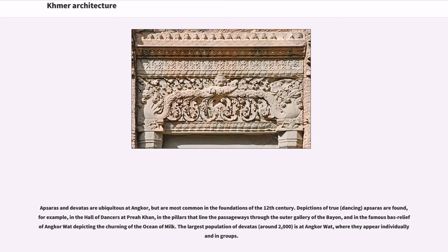Depictions of true, dancing Apsaras are found, for example, in the Hall of Dancers at Preah Khan, in the pillars lining the passageways through the outer gallery of the Bayon, and in the famous bas-relief of Angkor Wat depicting the churning of the ocean of milk. The largest population of Devatas, around 2,000, is at Angkor Wat, where they appear individually and in groups.